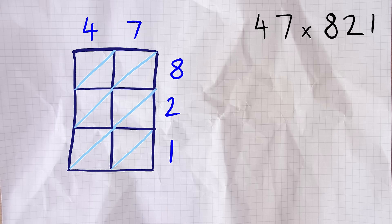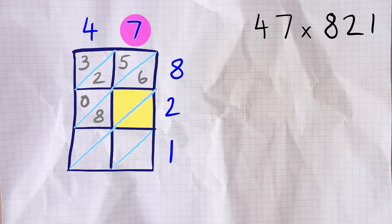The second stage is multiplying the numbers together inside the grid. You look at each square and multiply the number at the top of the grid by the number on the right hand side. So the first box will be 4 times 8 which is 32. The second box will be 7 times 8 which is 56. Moving to the second row, the first box is 4 times 2 which is 8. When your answer only has one digit, you write 0 in the first part of the box and then the 8 in the second part.